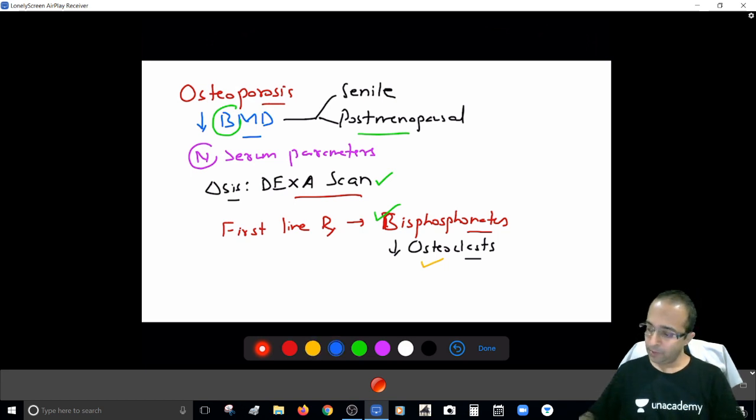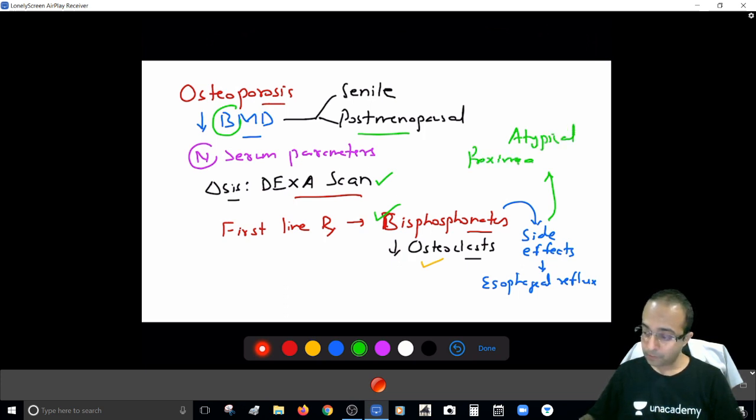But the problem is, sometimes the bisphosphonates are producing side effects. Commonest problem is esophageal reflux and ulcerations. And mind you, prolonged use can cause atypical proximal femur stress fractures. So even that remains a possibility. And sometimes we are given bisphosphonates, they are just a failure because the DEXA is not improving despite bisphosphonate therapy.